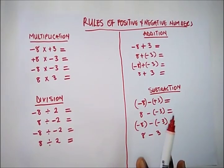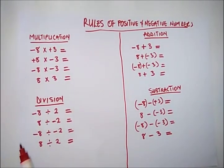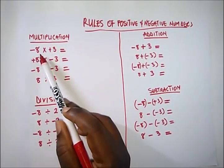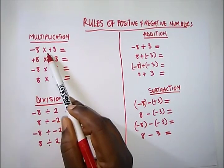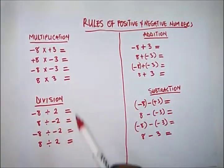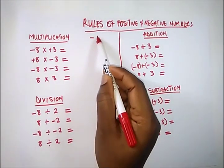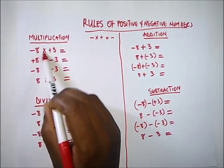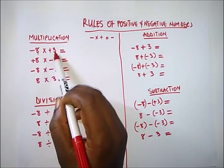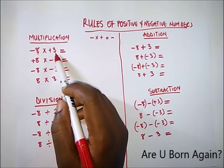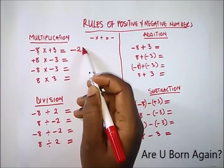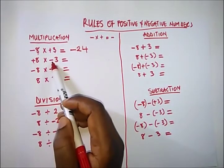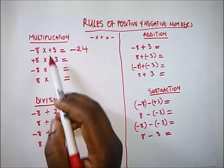In multiplication, if you have a negative number multiplying a positive number, the sign minus times plus will give us a negative. So for example, 8 times 3 is 24, and it carries a minus sign, giving us minus 24.